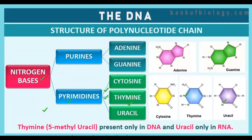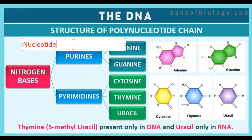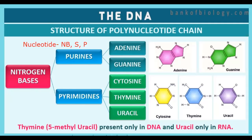Now, what have we studied here? The polynucleotide chain — a nucleotide consists of three things: the nitrogenous bases, the sugar, and the phosphate. The nitrogenous bases are of two types: the purines and the pyrimidines.